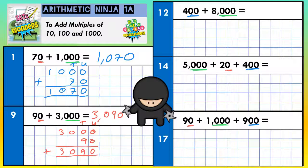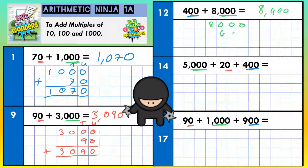The next one: 400 plus 8000. Say the bigger number first — that's 8000 plus 400, which is 8400. Remember, a comma goes after the thousands, so 8000, comma, 400. Quick check with the column method: nothing add nothing is nothing, nothing add four is four, eight add nothing is eight — eight thousand four hundred.